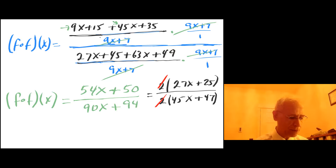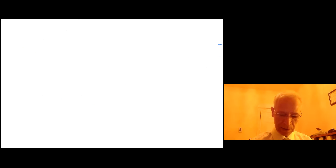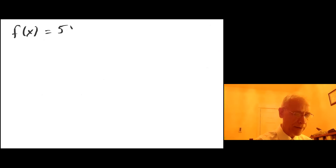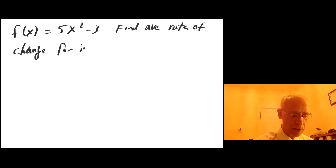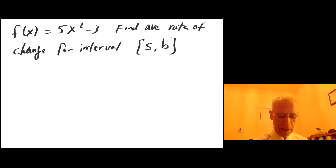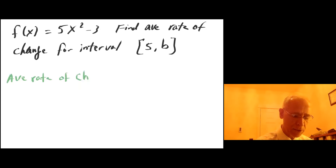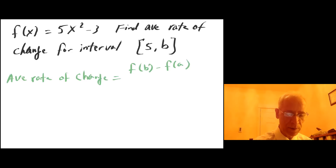Now for the second problem. The second problem was something like f of x equals 5x squared minus 3, and we need to find the average rate of change. We know that average rate of change equals f of b minus f of a over b minus a.